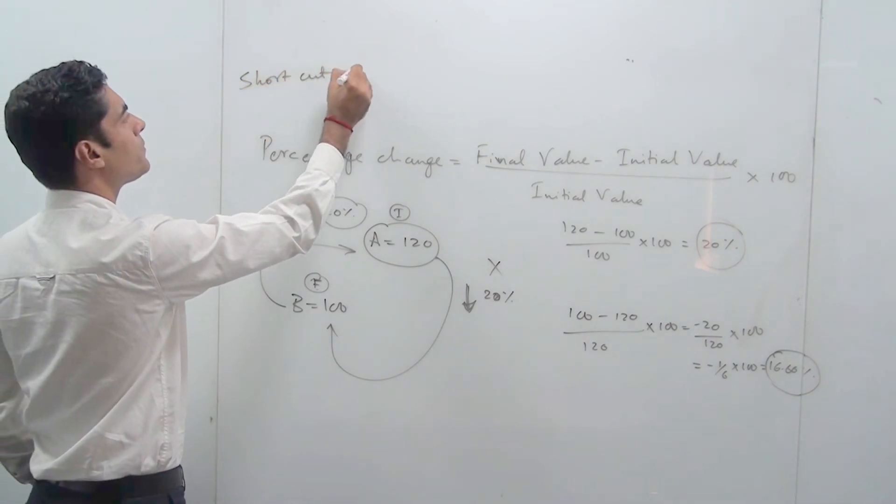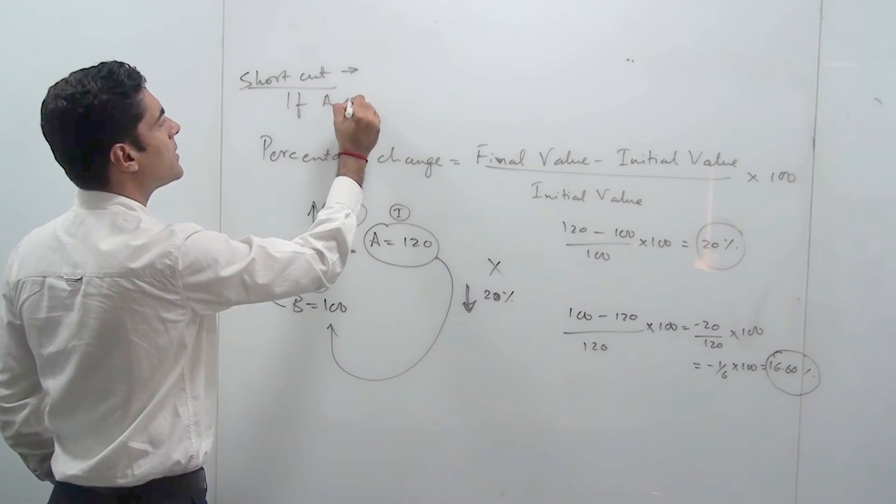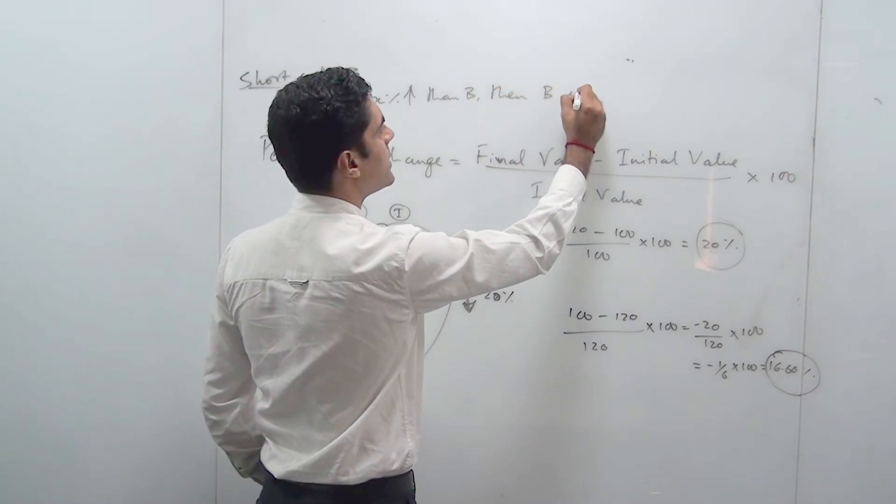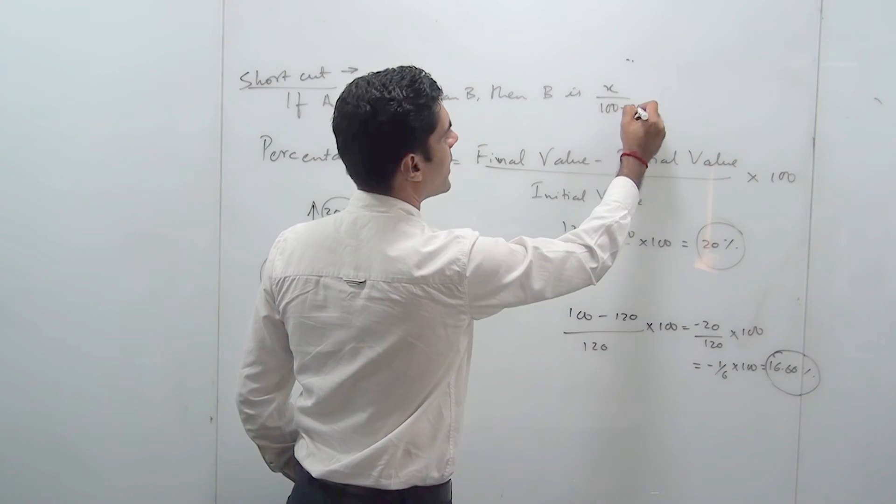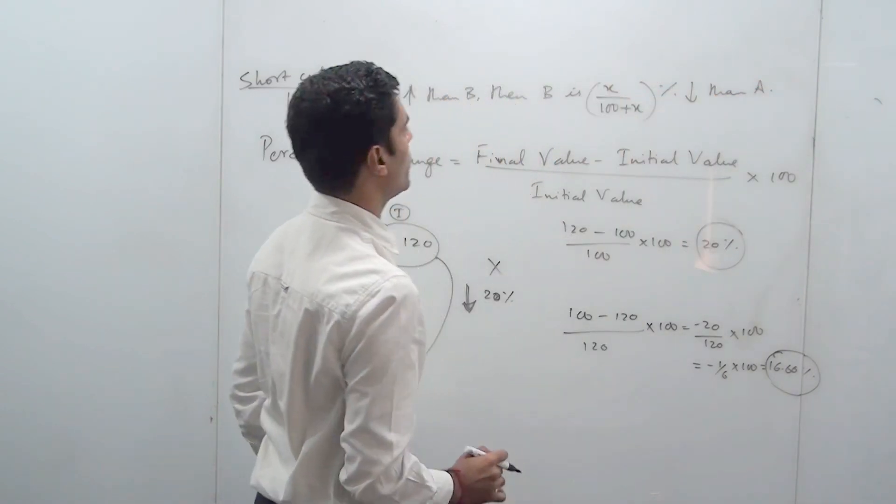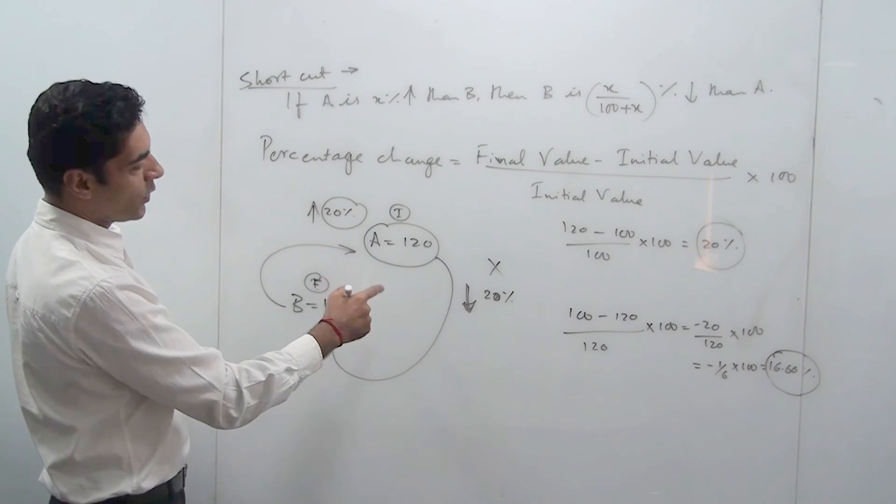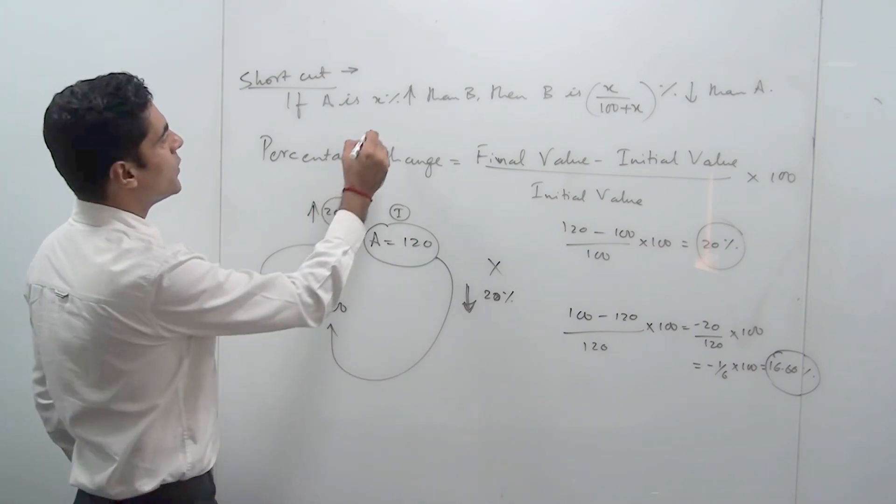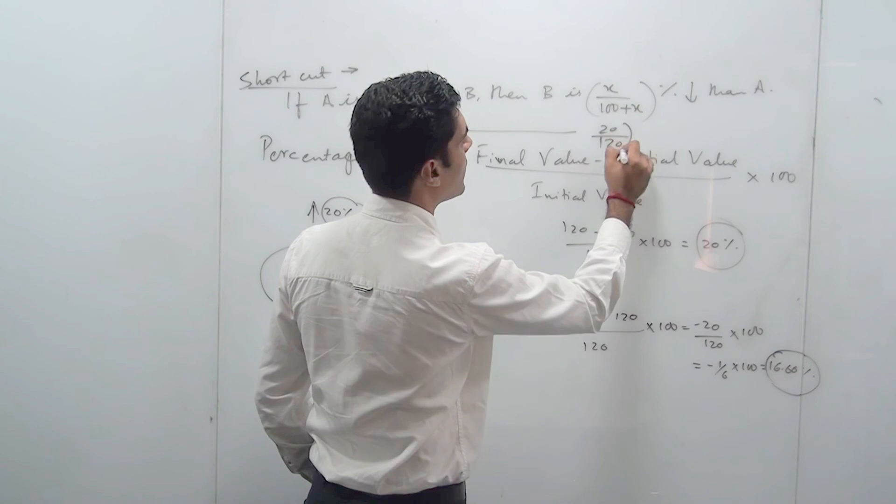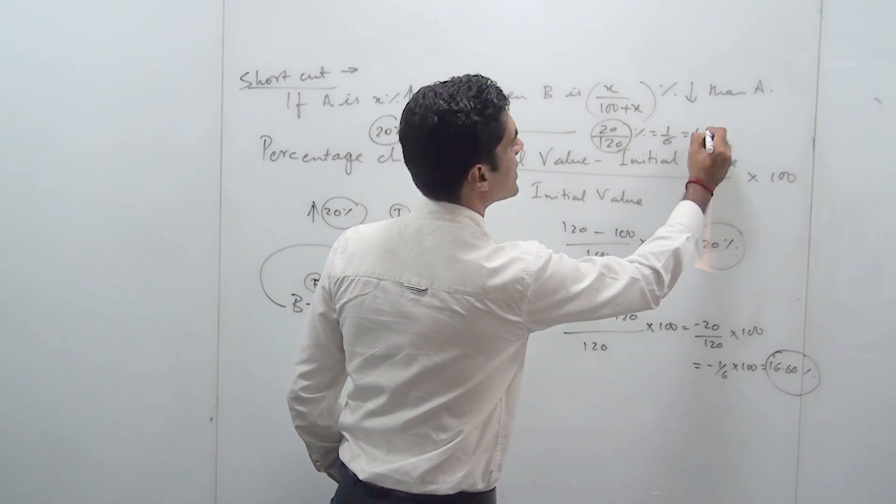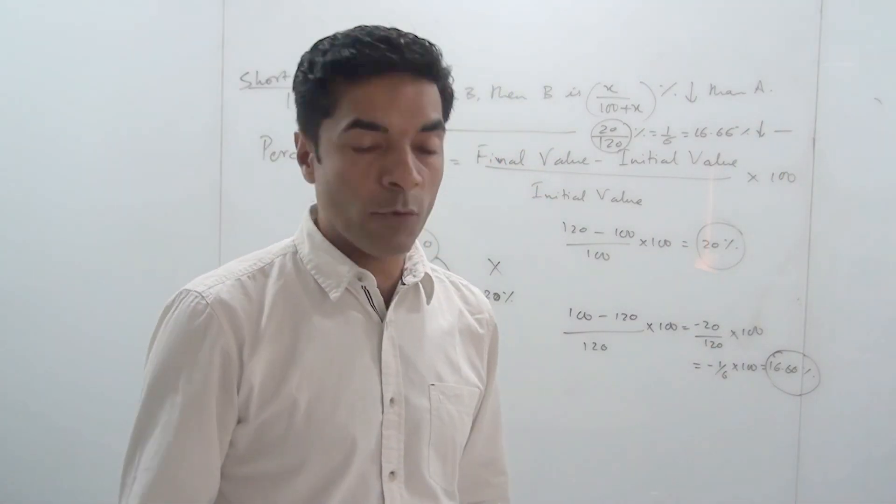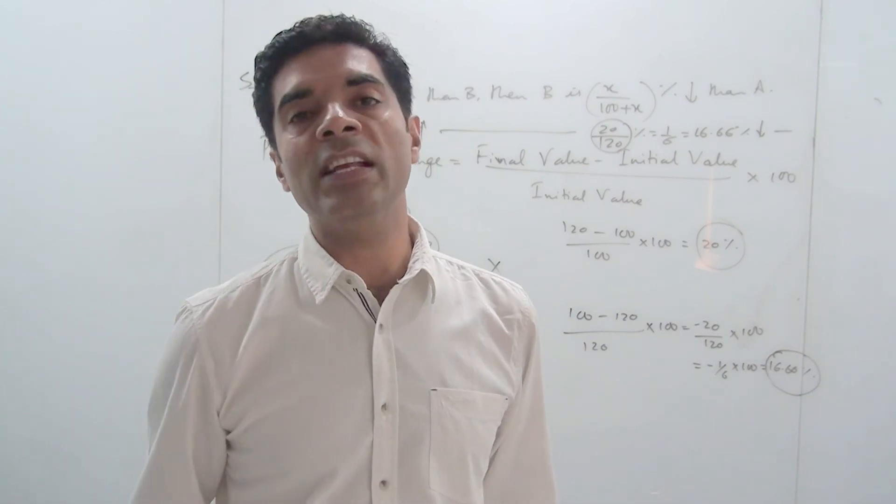If A is x percent more than B, then B is x upon 100 plus x percent less than A. This is a direct shortcut. In our case, A which is 120 is 20% more, so the value of x is 20%. Then B will be 20 upon 120, which is nothing but 1 by 6, which is 16.66% less than A. This has to be on your fingertips because if you know this you'll be able to solve a lot of questions with very less use of pen and paper.